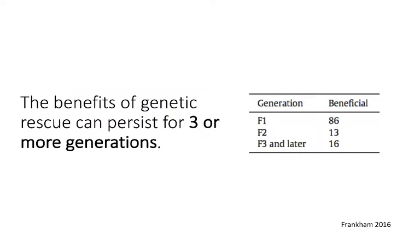Overall, different studies have found that the benefits of genetic rescue can last for three or more generations. This table, excerpted from a review paper, shows that across different generations — F1 is the first generation of hybrids, then F2 and F3 — by surveying a bunch of different translocations, they found beneficial effects not only in the first F1 generation but also in the F3 generation or later. Current data indicates the effect lasts at least three generations.